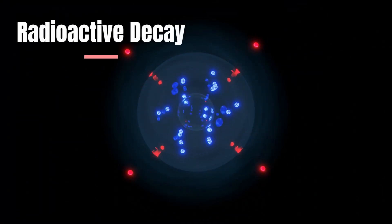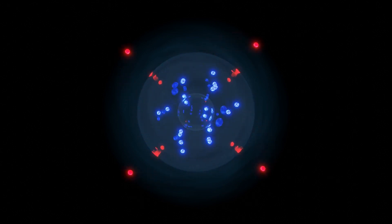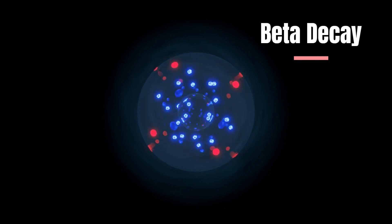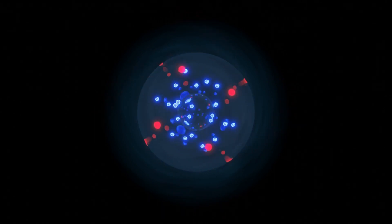In radioactive decay, an unstable atomic nucleus undergoes a spontaneous transformation, emitting particles and energy in the process. One common type of radioactive decay is beta decay, which involves the transformation of a neutron in the nucleus into a proton and an electron. During this process, an anti-quark is also produced.